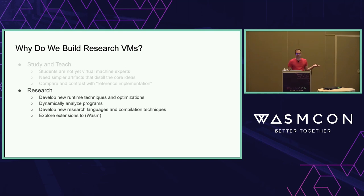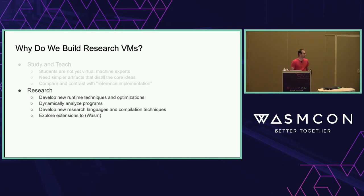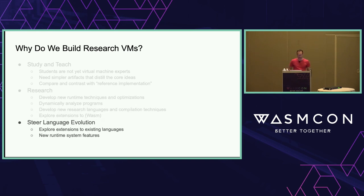Programs have bugs and sometimes run slow, so we want to analyze them — and production VMs aren't particularly focused on that, they're more focused on performance. There will also be new programming languages with new features in the future, and they'll need targets and compilation techniques, so you want a VM that can support exploration. WebAssembly itself should be subjected to research: if we add things to the standard, we should try them out, and you need a research VM to explore alternatives before settling on one. This also means we can steer language evolution and experiment with VM extensions.